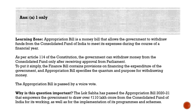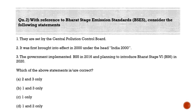Now we'll move to the second question. With reference to Bharat Stage Emission Standards, consider the following statements. Statement 1: they are set by the Central Pollution Control Board. Statement 2: it was first brought into effect in 2000 under the head 'India 2000'. Statement 3: the government implemented BS5 in 2016 and planned to introduce BS6 in 2020. Which of the above statements is/are correct? Option A: 2 and 3 only, Option B: 1 and 3 only, Option C: 1 only, Option D: 1 and 2 only.